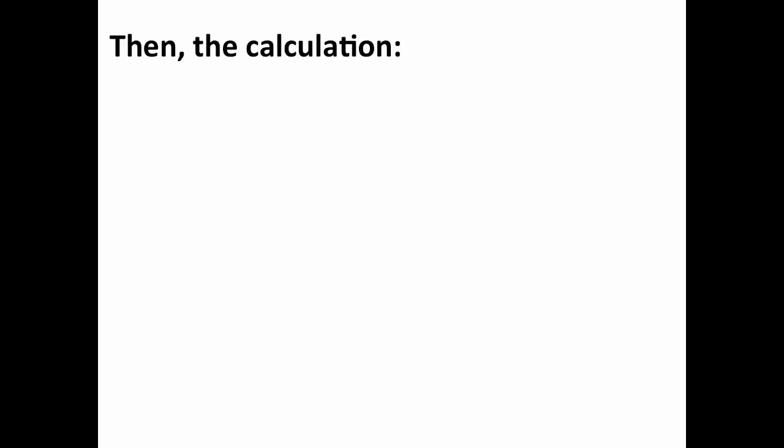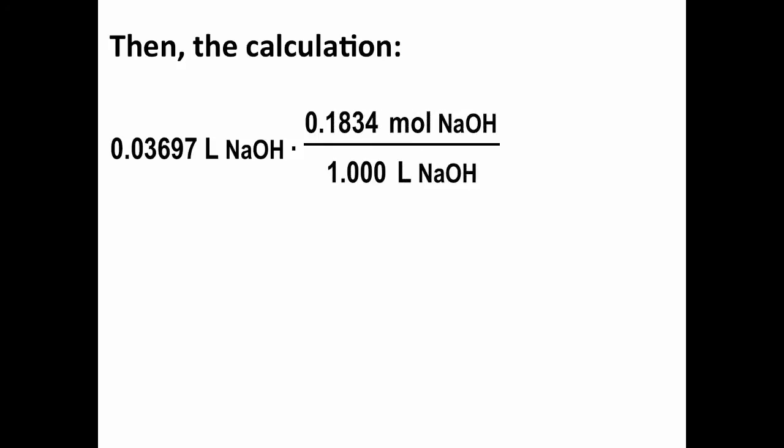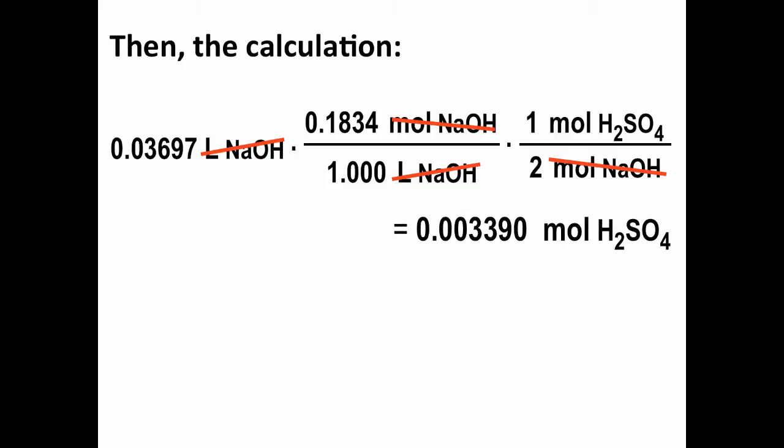Okay, then we move on to the calculation. And we have 36.97 milliliters of sodium hydroxide solution, or 0.03697 liters of sodium hydroxide solution. And we've converted to liters because we use the concentration of the sodium hydroxide solution, 0.1834 moles per one liter of the solution, to convert from liters into moles. And then, since there are two moles of NaOH required to titrate or react with one mole of sulfuric acid, a second conversion allows us to calculate the number of moles of sulfuric acid in our sample. And that turns out to be 0.003390 moles of H2SO4.